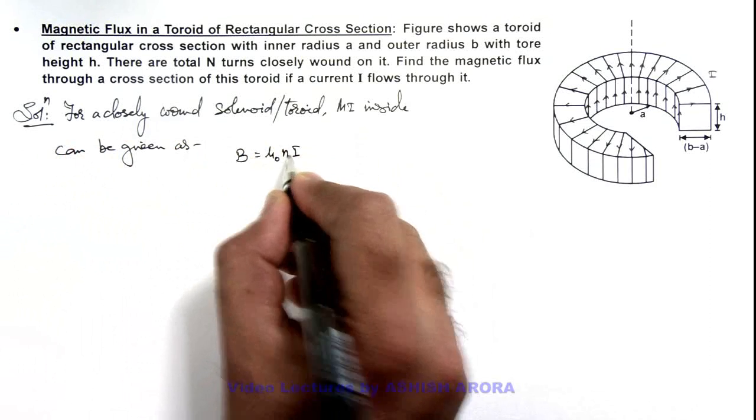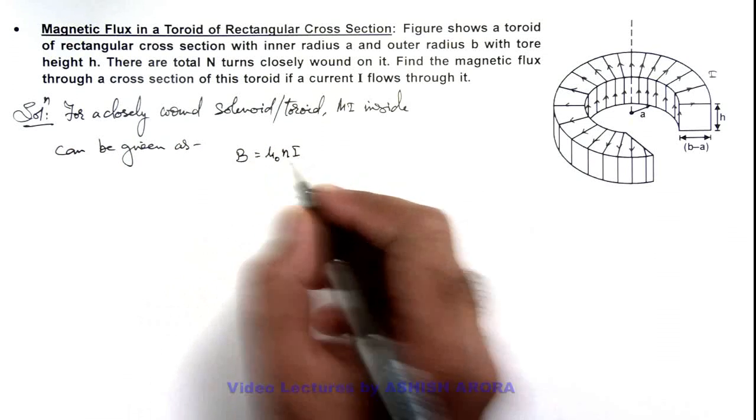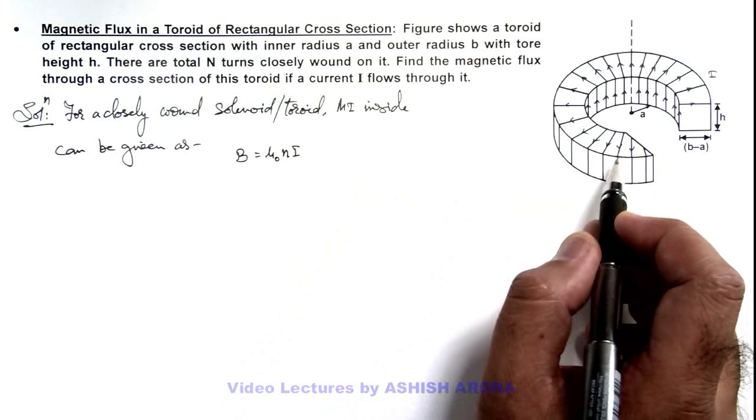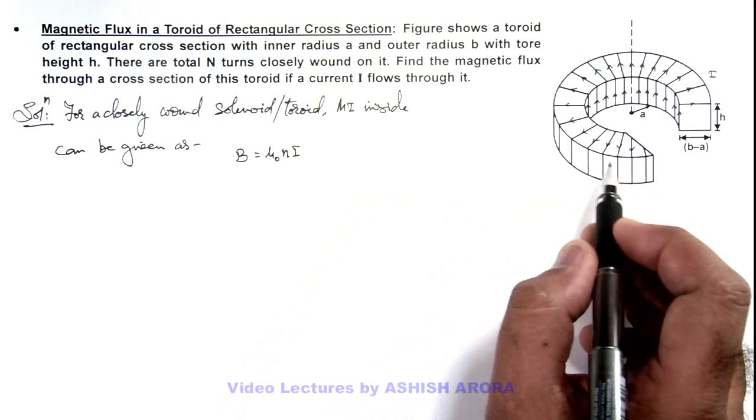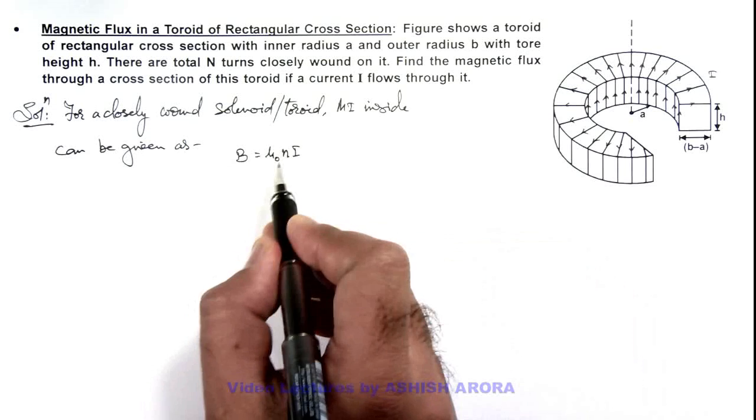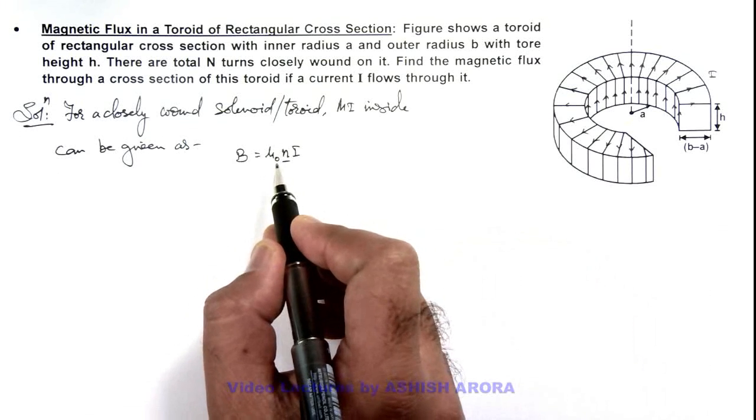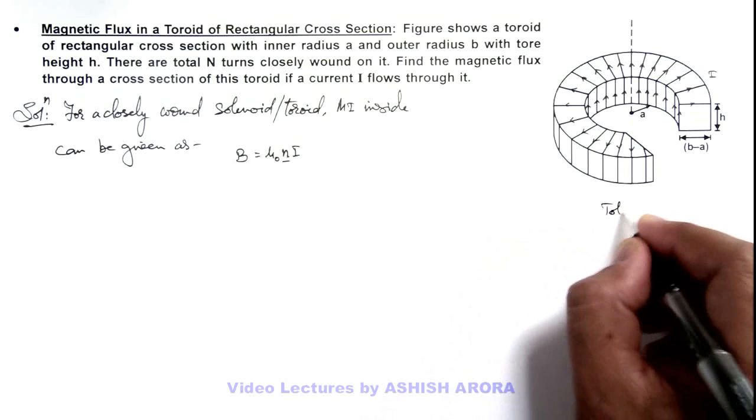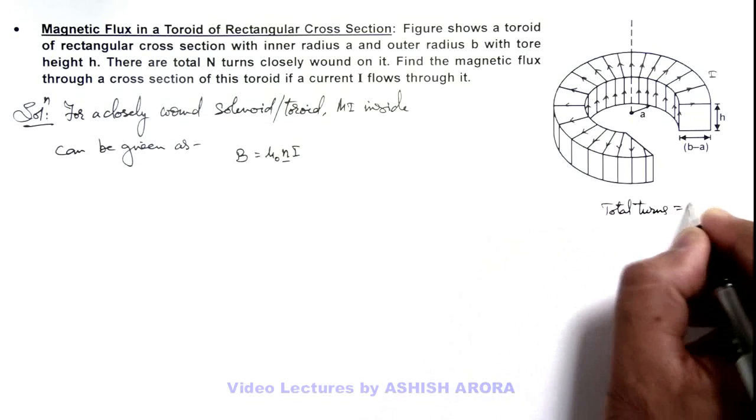In this situation, if we consider its average radius to be r, then small n, that is turns per unit length, we can write as n = N/(2πr), because here we are given that total turns are N.